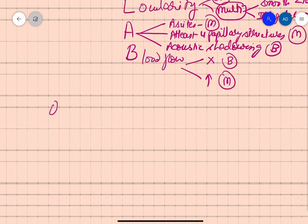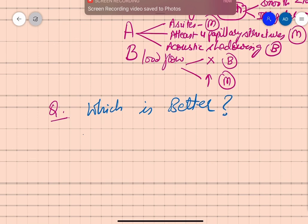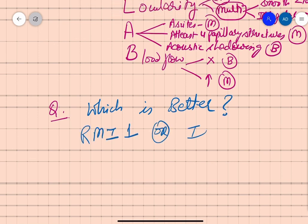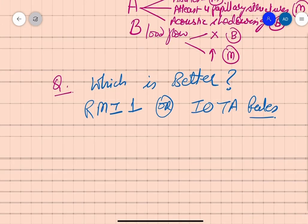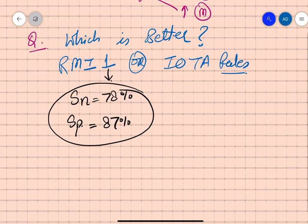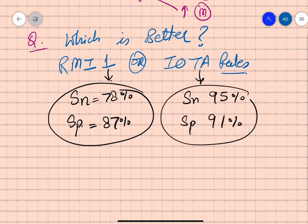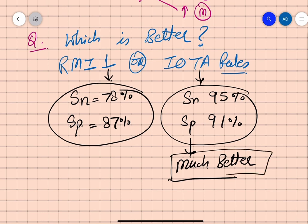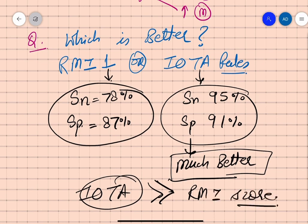An important question is: which is better, RMI1 or IOTA rules? Studies found that RMI has a sensitivity of 78% and specificity of 87%, which is pretty good. But for IOTA rules, sensitivity is 95% and specificity is 91%. So IOTA is much better than RMI, and nowadays if given an option, IOTA is preferred over RMI score.